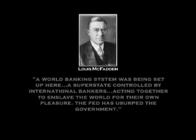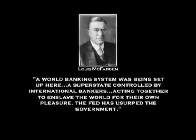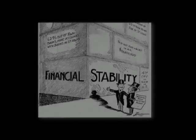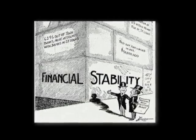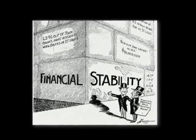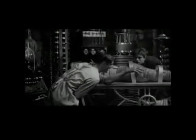Congressman Lewis McFadden also expressed the truth after the passage of the bill: 'A world banking system was being set up here — a super state controlled by international bankers, acting together to enslave the world for their own pleasure. The Fed has usurped the government.' The public was told that the Federal Reserve System was an economic stabilizer and that inflation and economic crises were a thing of the past. But as history has shown, nothing is further from the truth. The international bankers now had a streamlined machine to expand their personal ambitions.